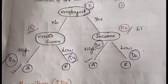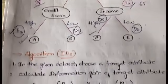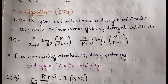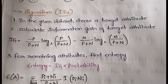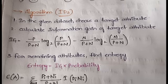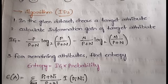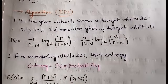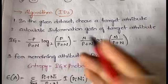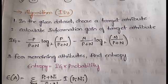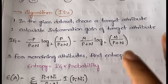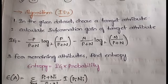Now let's see the algorithm steps. First, choose the target attribute from your dataset — you may have attributes like age, income, and credit status; you pick the target. Second, calculate the information gain of the target attribute using the formula: negative ( p/(p+n) × log₂(p/(p+n)) ) minus ( n/(p+n) × log₂(n/(p+n)) ). You only apply this information gain formula to the target attribute.